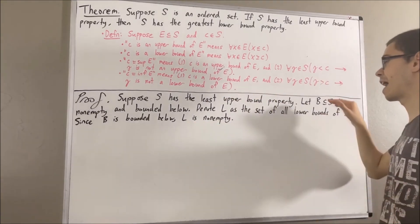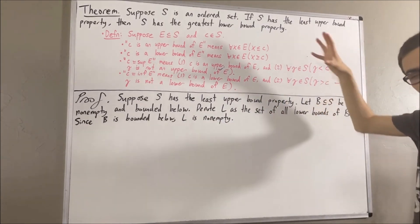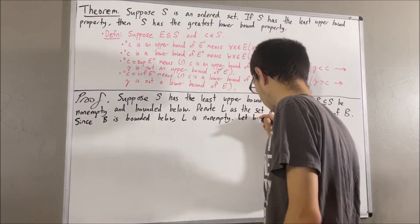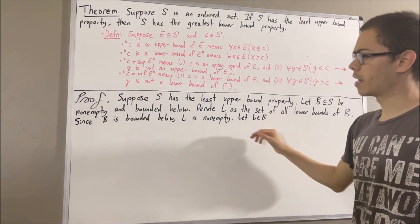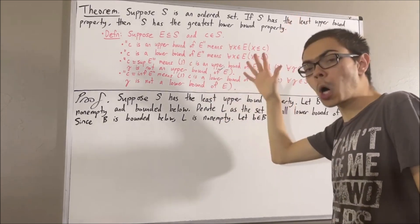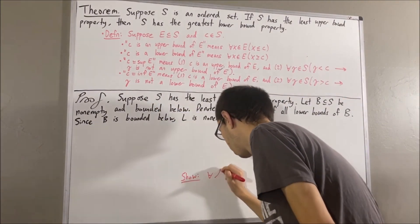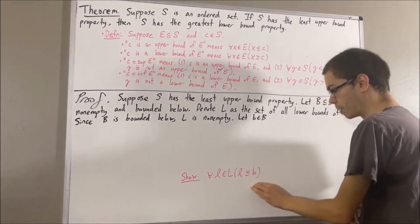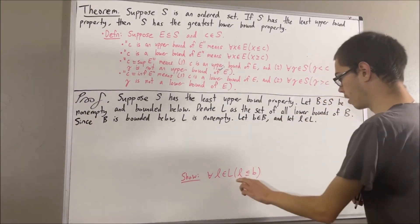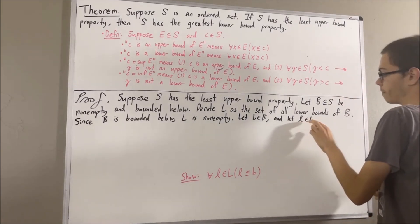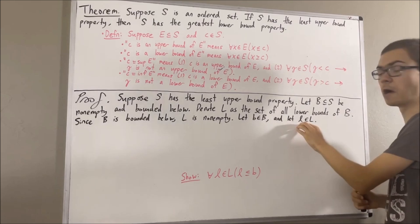Now, it makes sense to expect that every element of B is an upper bound of L. And let's actually prove that. Since we're trying to prove a statement about every element of B, let's give ourselves an arbitrary element of B. From here, we want to show that B is an upper bound of L. And by definition of upper bound, this means we want to show for all L in L, L is less than or equal to B. And since we're trying to prove a statement about every element of L, let's give ourselves an arbitrary element of L. From here, we want to show that L is less than or equal to B. Well, since L is an element of L, this means that L is a lower bound of B.